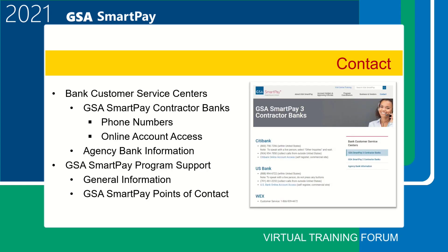Under Contact, we list the bank customer service centers. A customer would contact the bank directly for questions related to their specific account, such as making a payment, handling a dispute, or not receiving their card in the mail. The online account access is a direct link to the login page for the account holder, where they view their purchases and pay their bill. The GSA SmartPay program support assists with general questions about the program or website, such as help resetting a password. We also have specific points of contact listed here.